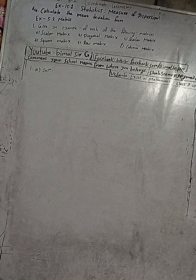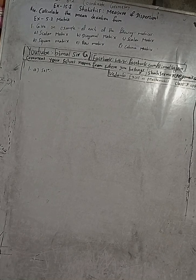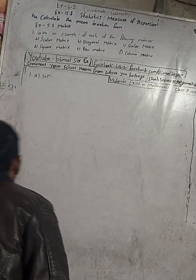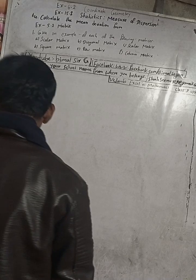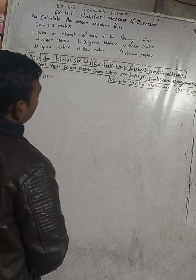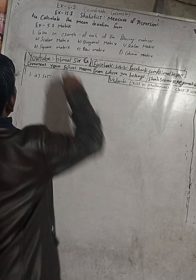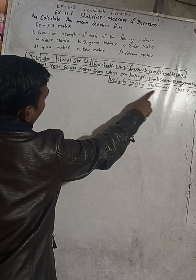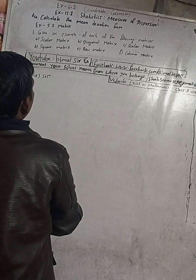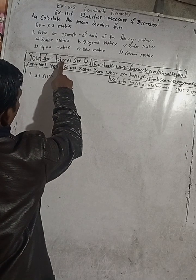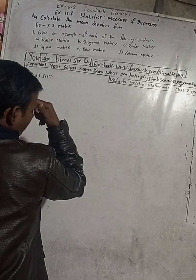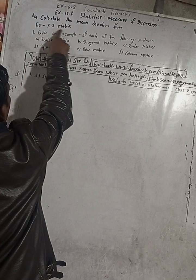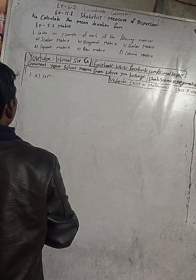Hi class 9 and 10 students, welcome back to Vimalisarji's YouTube channel. In this chilly cold season, I am here to warm up your days and nights with exciting content. This is question number one, exercise 5.2, matrix, from Vedant Excel in Optional Maths class 9. Don't forget to check the playlist in the Vimalisarji playlist — you will get many solutions, and the playlist is created with exercise names.